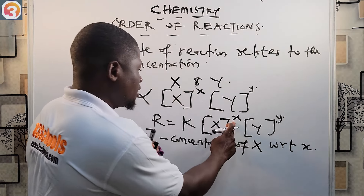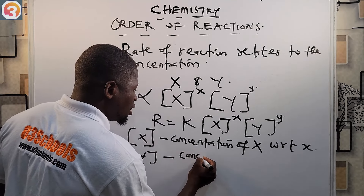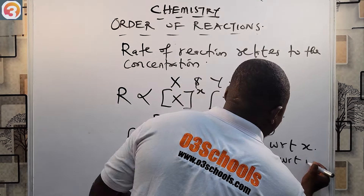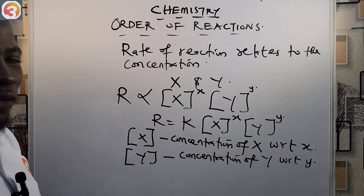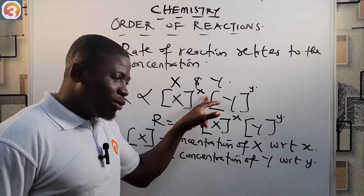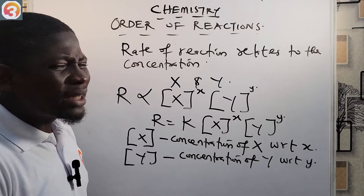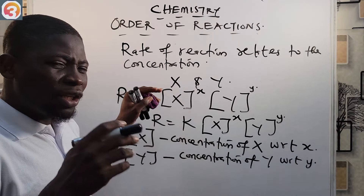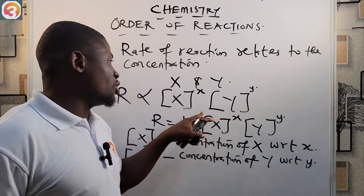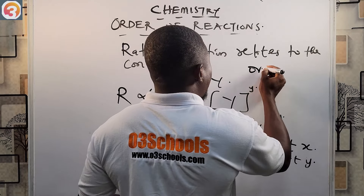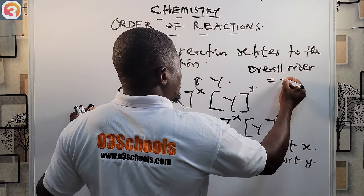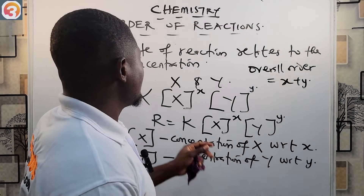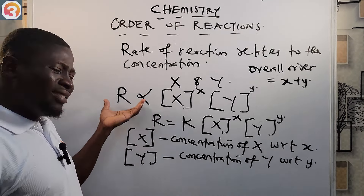What we may find out from the experiment is that the rate of reaction R is directly proportional to [x]^x times [y]^y, where x and y in the exponent refer to the order with respect to each reactant. If we remove the proportionality sign, we introduce the rate constant k, giving: R = k[x]^x[y]^y.